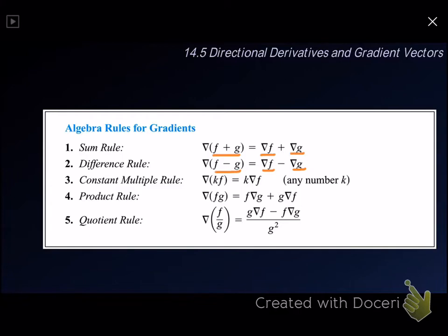Now, if you have a constant — any number k — multiplied with a function f, and you want to find the gradient of kf, then it will be equal to k multiplied with gradient of f. It means we take out this k, and we only find the gradient of f, then we multiply with k.